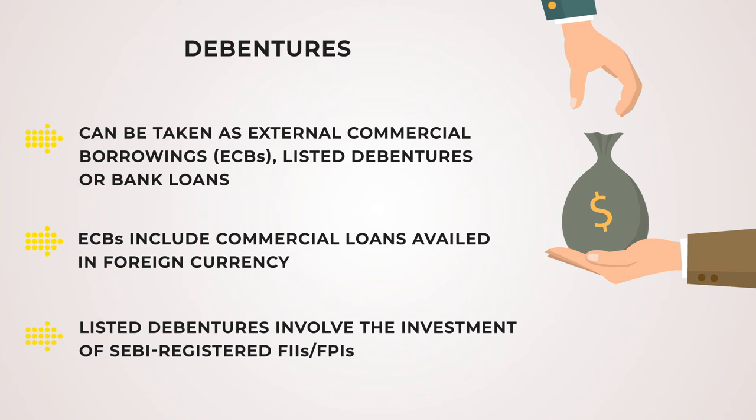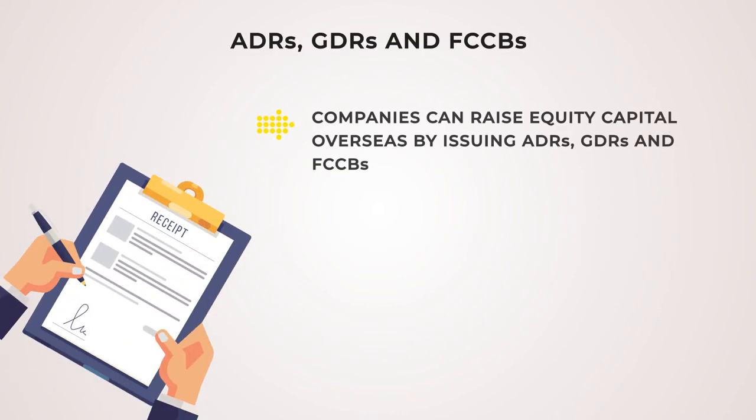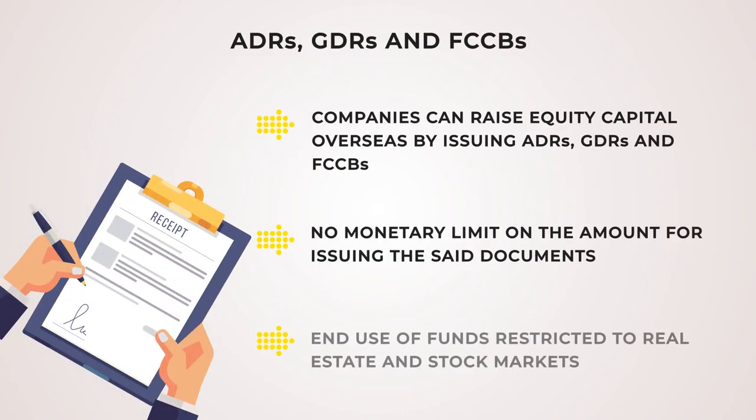Since listed debenture bonds involve SEBI-registered FIIs and FPIs, external commercial borrowings often include three tracks with respect to eligible borrowers, lenders, and all-in-cost ceilings. The fourth method involves companies raising equity capital via issuing ADRs, GDRs, and FCCBs in the form of INR-denominated equity shares or bonds. There is no monetary limit on the amount for which these instruments are issued, and the end use of the funds is restricted to real estate and stock markets.